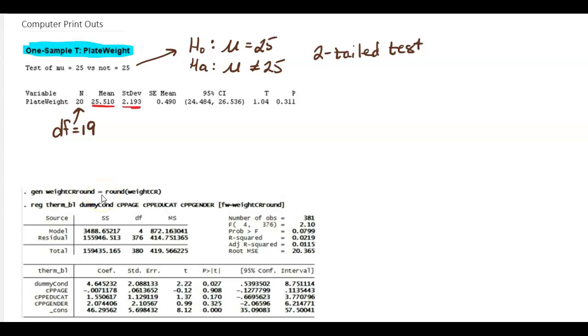This is the standard deviation of the sample. And they actually calculated it. This will not always be here. They did the 2.193 divided by the square root of 20. So that's what that is. Here it tells you your confidence interval. This is your t value. And then that right there is our p value.